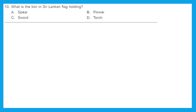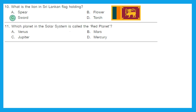Question 10: What is the lion in the Sri Lankan flag holding? The lion in the Sri Lankan flag is holding a sword. Option C is the right answer. Question 11: Which planet in the solar system is called the Red Planet? It's Mars — it is called the Red Planet because of the iron content in the soil and dust particles of Mars.